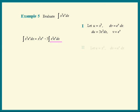What's dv? Same thing, e to the x dx. That means u is x squared. du is now 2x dx and v is e to the x.